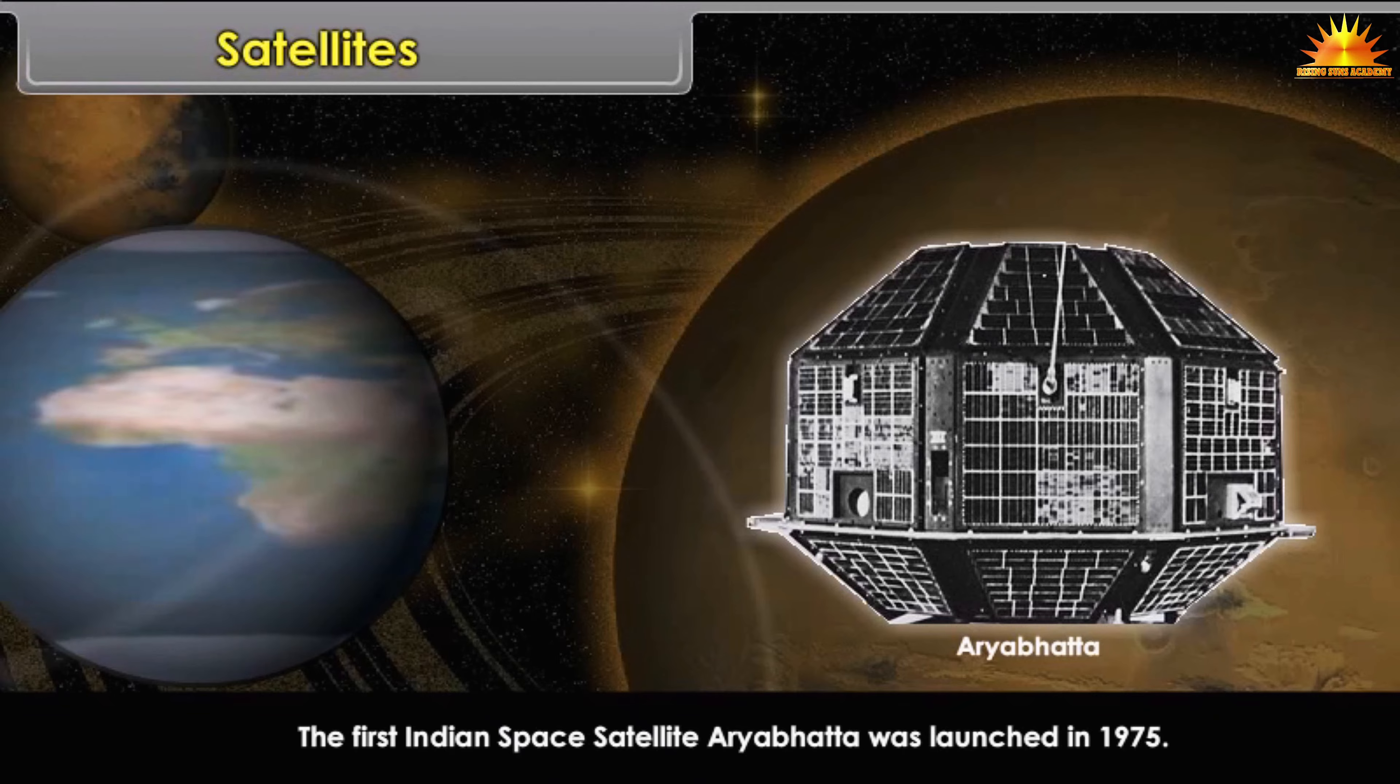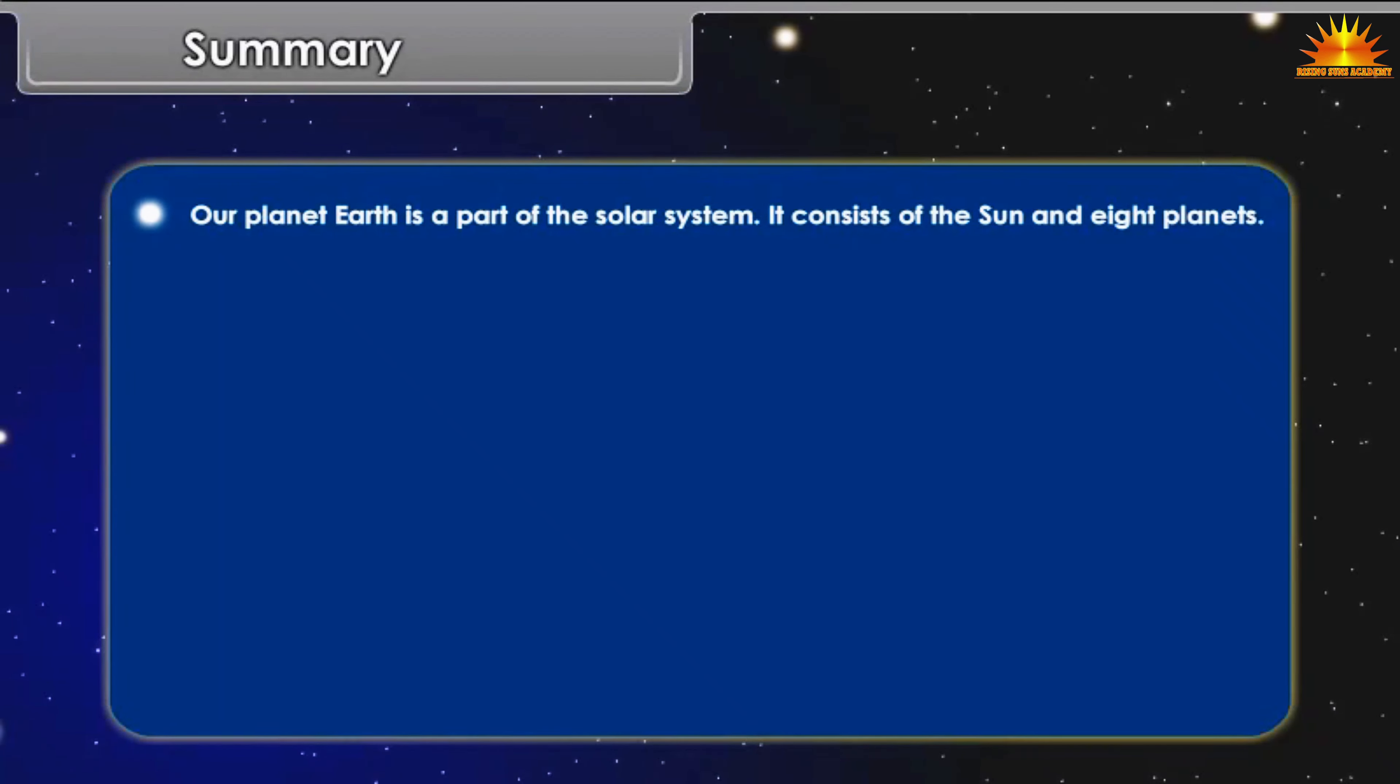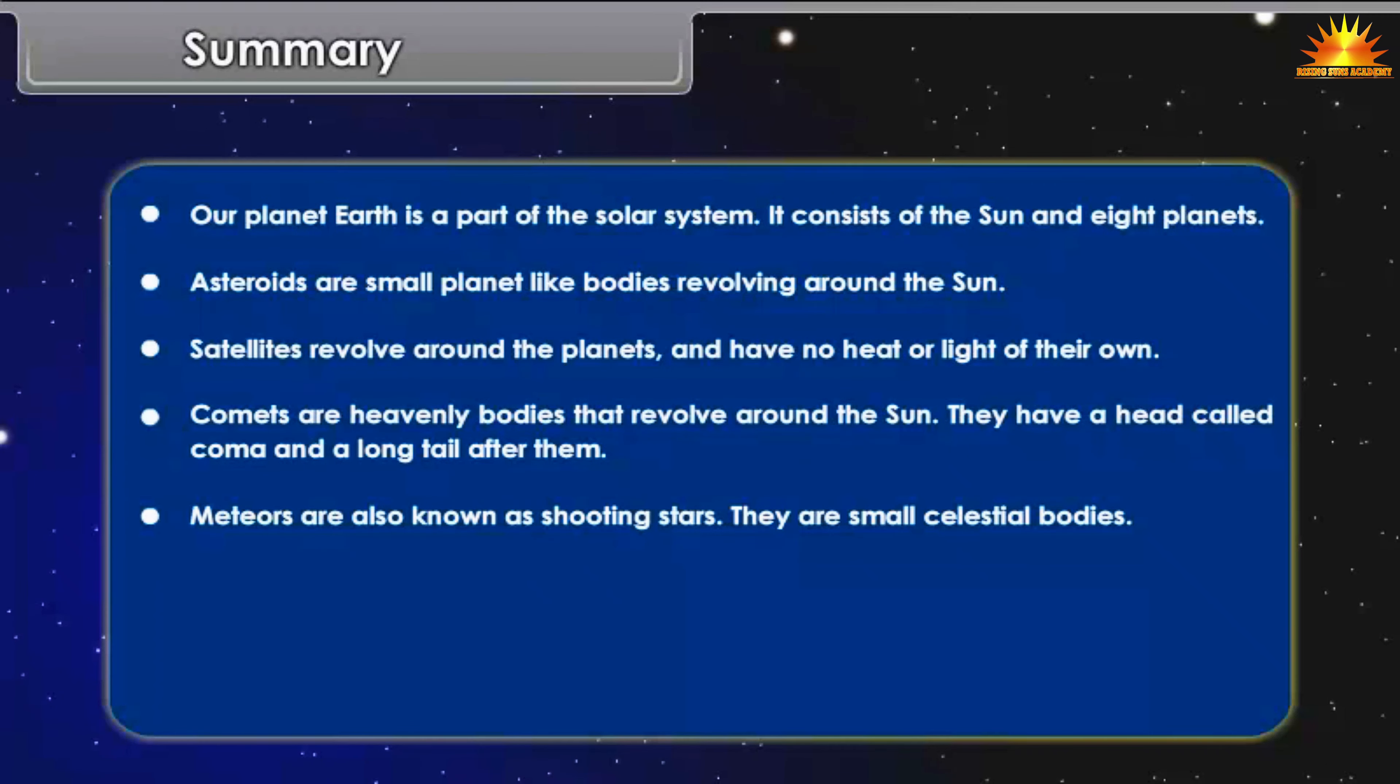Summary: Our planet Earth is a part of the solar system. It consists of the Sun and 8 planets. Asteroids are small planet-like bodies revolving around the Sun. Satellites revolve around the planets and have no heat or light of their own. Comets are heavenly bodies that revolve around the Sun. They have a head called Koma and a long tail after them. Meteors are also known as shooting stars. They are small celestial bodies.